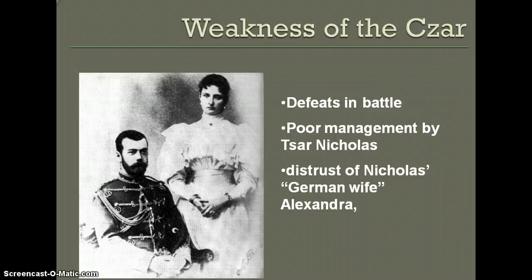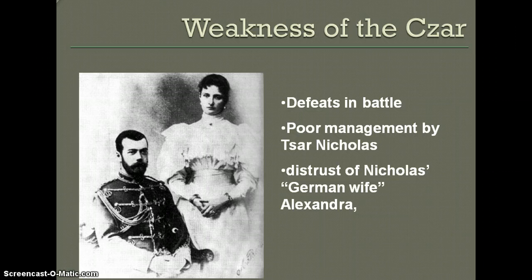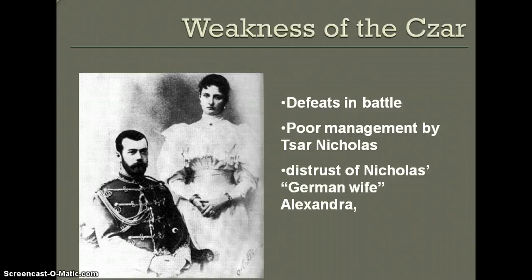Another serious problem was the weakness of the Tsar himself. The ruler of Russia was Tsar Nicholas, an absolute monarch with total power. He was a weak man who used his secret police, the Okhrana, to persecute opponents. Books and newspapers were censored. Nicholas II ruled a vast country that was almost medieval in comparison to other countries, and his undemocratic government was a major cause of the revolution.